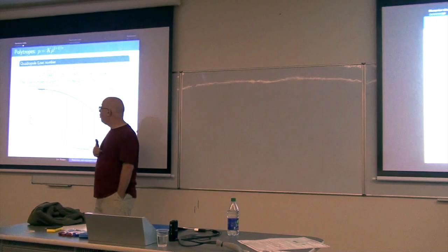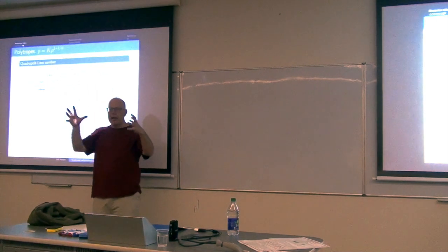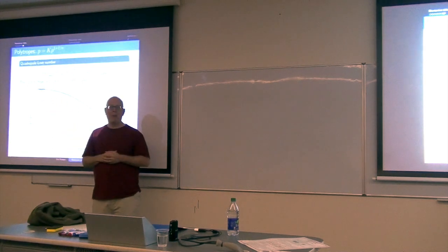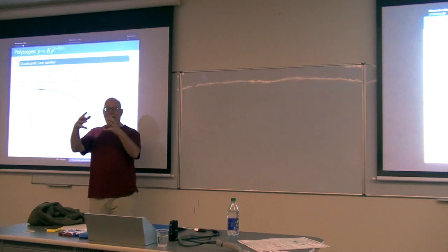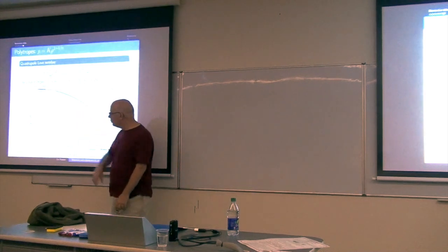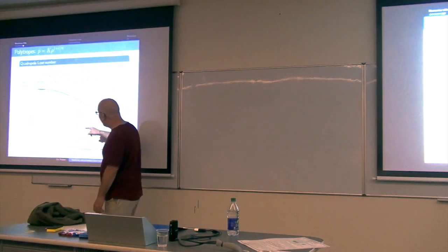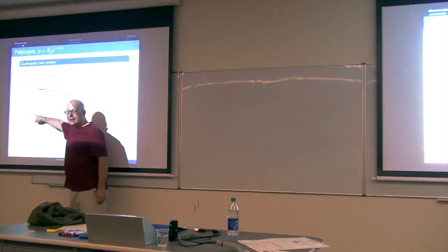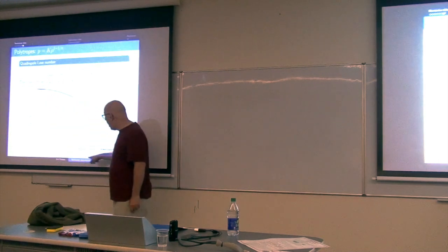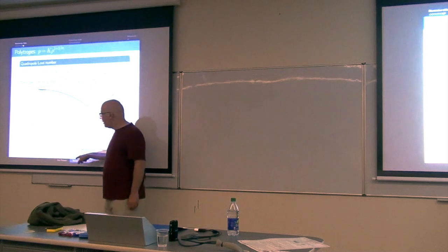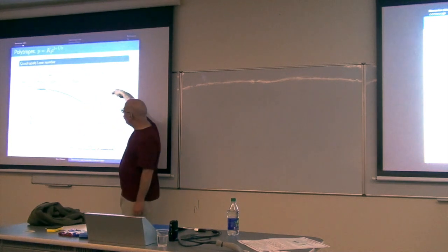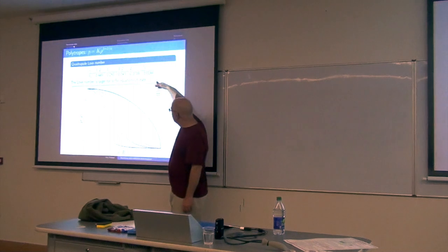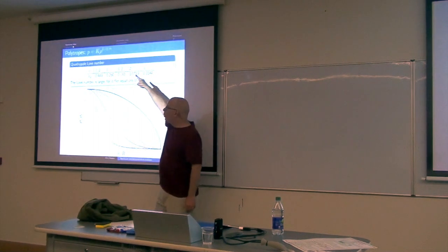A low power means less pressure for a given density, producing a small body. What turns out to be important for us is not so much the size of the body — that comes with five powers of the body radius — but for the love number, what matters is a scale-free version of how the mass is distributed inside the star. I have curves of density divided by the central density as a function of r normalized to the body radius R. They all start at 0 and go to 1, and curves are presented in order of n. As n increases, the power decreases.